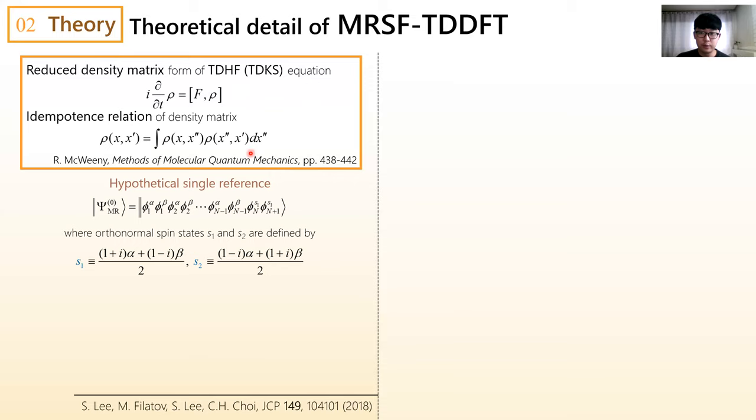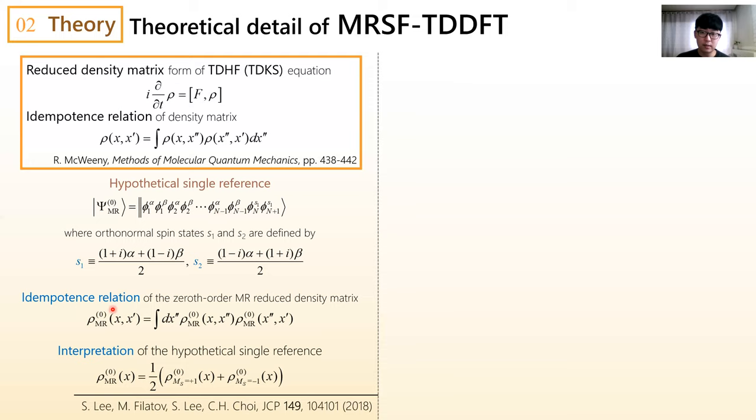In this regard, we introduce a hypothetical single reference with a spinor-like open-shell multi-orbitals with orthonormal spin states defined by this relation. Here, i denotes the imaginary number unit. Since this is a hypothetical pure state, the corresponding reduced density matrix is idempotent. And the most important part is the density of this reference is the same as mixed form of densities for these two components of triplet references. This is the reason we called this method as mixed reference spin-flip TDDFT.